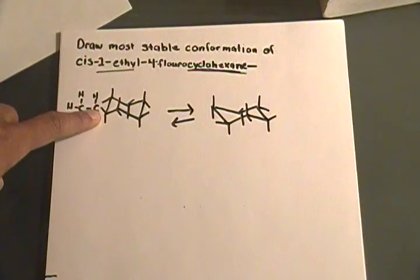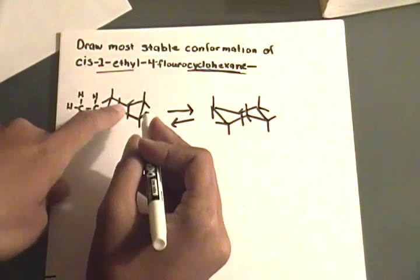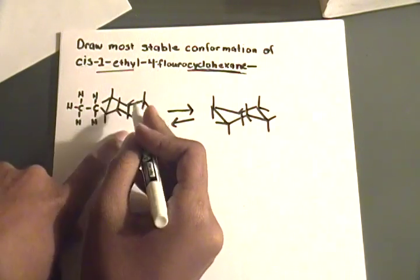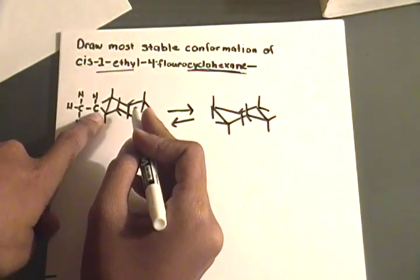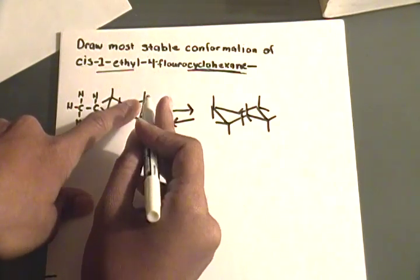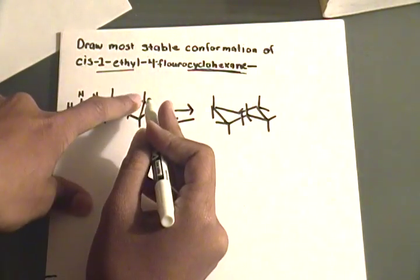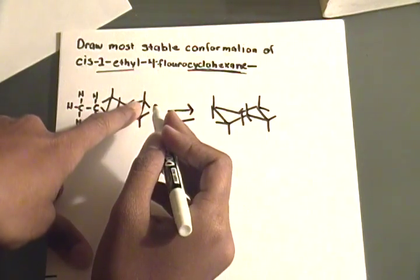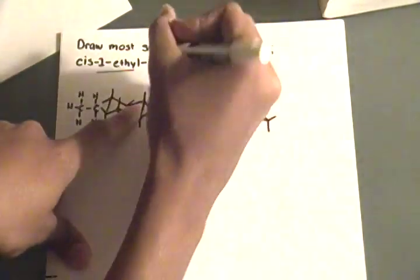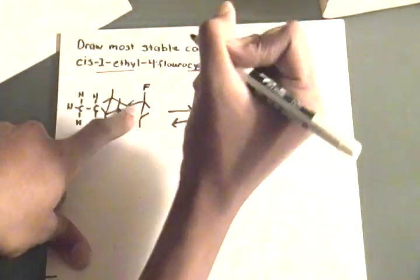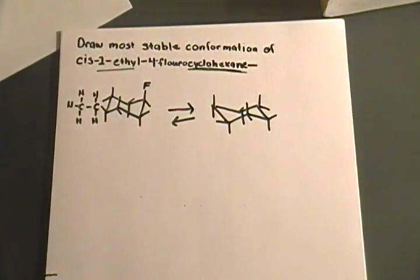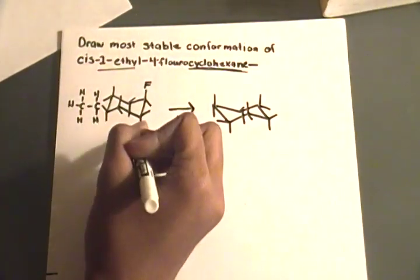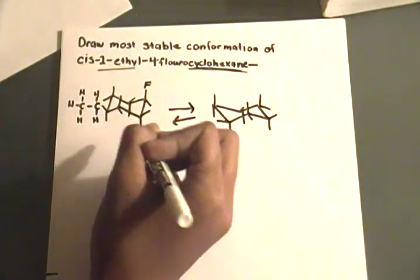It was random how we picked it. We picked this, I picked this as going up, equatorial on this carbon. So for it to be cis, on the number four carbon, the fluorine group has to be going up. Since this is going up, it has to be going up. So my up position here is an axial position. The equatorial position is going down. So I have to put the fluorine group on the axial up position. And that's it. That's the first molecule. That's its first structure. This is how it's going to be in one of its structures.